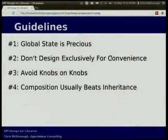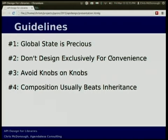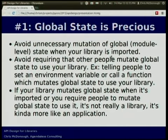Here are the guidelines. The first one is: global state is precious. Global state is module scope state in a Python program. The second is: don't design exclusively for convenience. The third: avoid knobs on knobs. And the fourth: composition usually beats inheritance. I'm going to talk about each one of these. So the first one we'll talk about is global state. What you want to do when you write a library is avoid unnecessary mutation of global state.